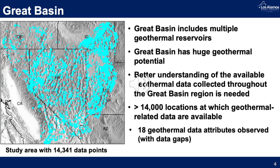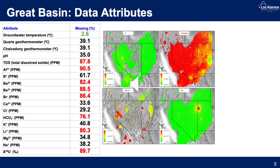Here we present one of the datasets available on the website. The Great Basin is a vast territory covering several states, and there is a lot of geochemical data within this region. We analyze data from 40,000 locations and 18 different geothermal attributes, with a lot of data gaps and measurement errors. The spatial coverage of the data is shown on the right, and on the left is a table listing the attributes analyzed and the percent of missing data in these datasets.